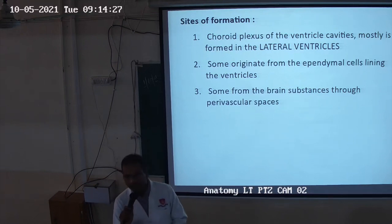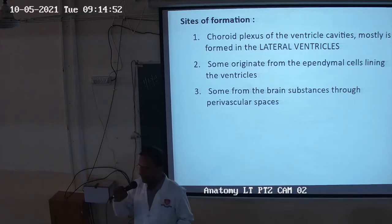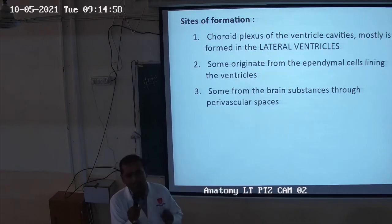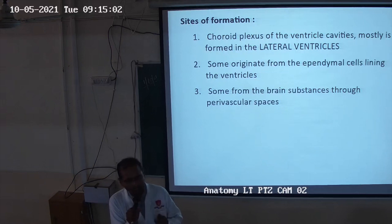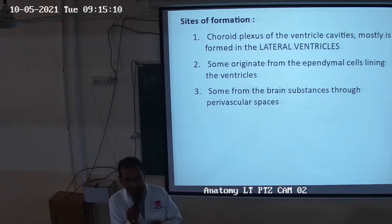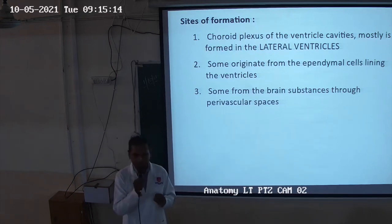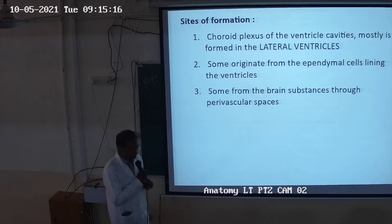Whenever you are asked: the lateral ventricle is a cavity of the forebrain or Prosencephalon. The third ventricle is a cavity of the midbrain. And the fourth ventricle is a cavity of the hindbrain — Rhombencephalon — which is present just posterior to the pons and medulla, and just anterior to the cerebellar hemisphere.